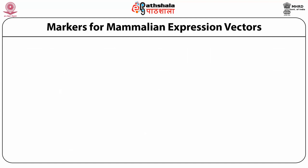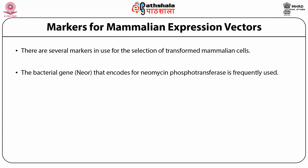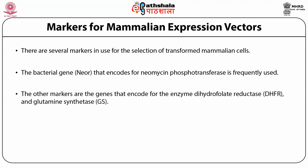Markers for mammalian expression vectors: there are several markers in use for the selection of transformed mammalian cells. The bacterial gene that encodes for neomycin phosphotransferase is frequently used. The other markers are the genes that encode for the enzymes dihydrofolate reductase and glutamine synthase.